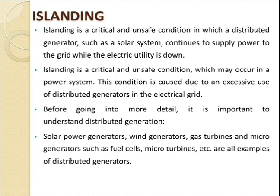Before going through islanding, there is one more parameter — the distributed generator. What do you mean by distributed generator? It includes different kinds of solar systems, wind generators, gas turbines, fuel cells, and micro fuel cells. All these kinds of generators are considered as distributed generators, which are used to generate and supply electricity.